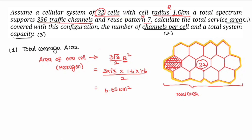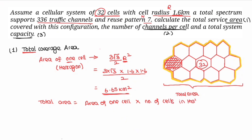Multiplying gives a value of 6.65 km² for the area of one cell. Total coverage area equals area of one cell into number of cells: 6.65 into 32 gives approximately 212.8 km² — this is the total coverage area.